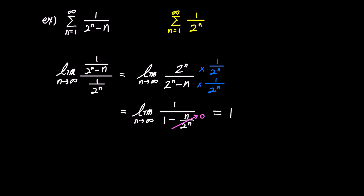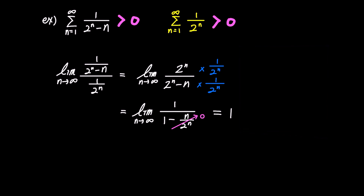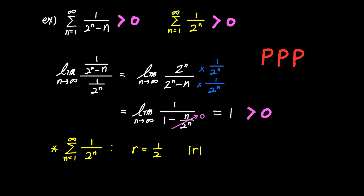Now let's check if the three conditions of the limit comparison test are satisfied. Both the sequence 1 over 2 to the power of n minus n and the comparison series 1 over 2 to the power of n are always positive for n greater than or equal to 1, and the limit we found is also positive. Therefore, all three conditions are met, and the two series either both converge or both diverge. Since the infinite sum of 1 over 2 to the power of n is a geometric series with a common ratio of one-half, and this common ratio is less than 1, it converges. Therefore, 1 over 2 to the power of n minus n also converges.